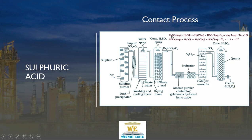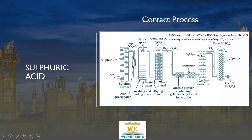Finally, this Oleum is used to produce Sulphuric acid of desired concentration. In H2SO4, the first dissociation constant Ka1 is extremely high but the second dissociation constant Ka2 is low. The overall dissociation constant is obtained by multiplication of Ka1 and Ka2.